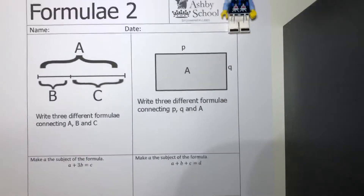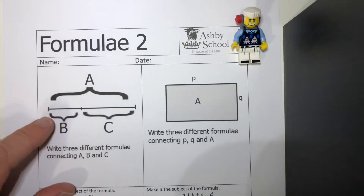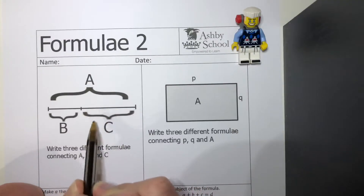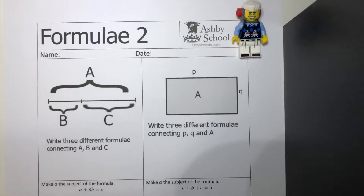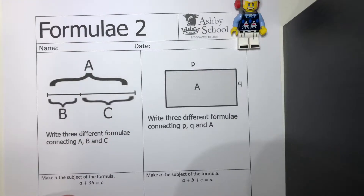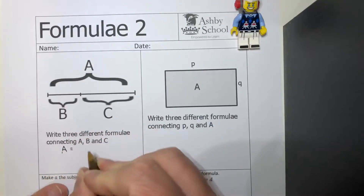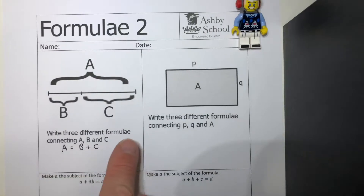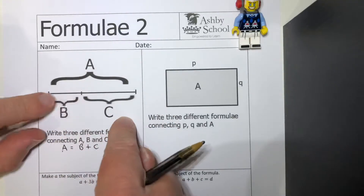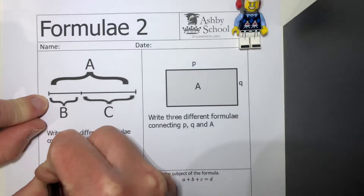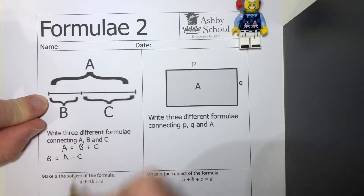Looking at this line here: the length of the whole line is a, the first part is b, and the second part is c. The obvious formula is that a equals b add c - the whole thing is b and c added together. If you just wanted to know what b was in terms of a and c, well it's the whole thing take away this bit, so a rearrangement would be b equals a take away c.